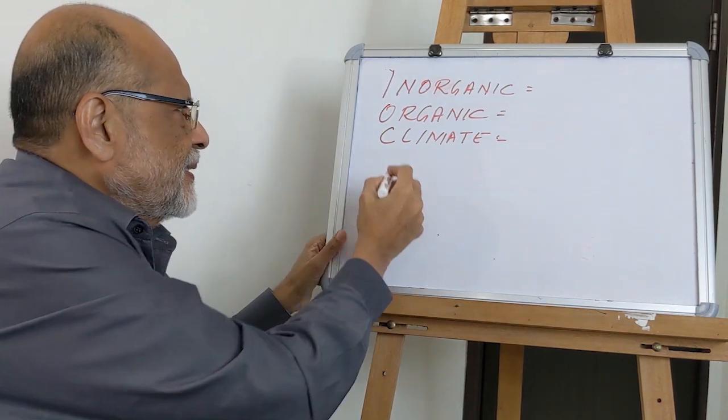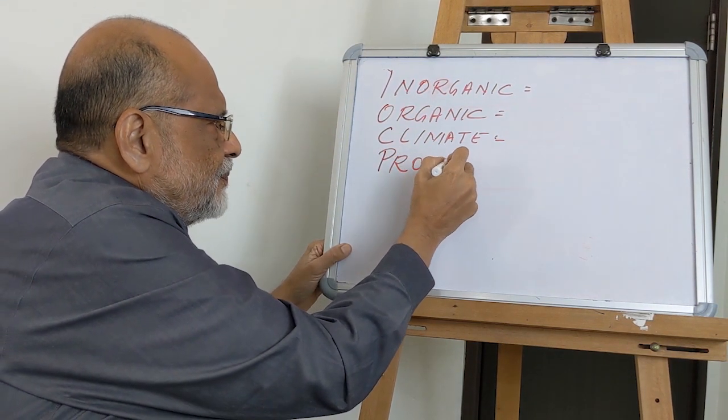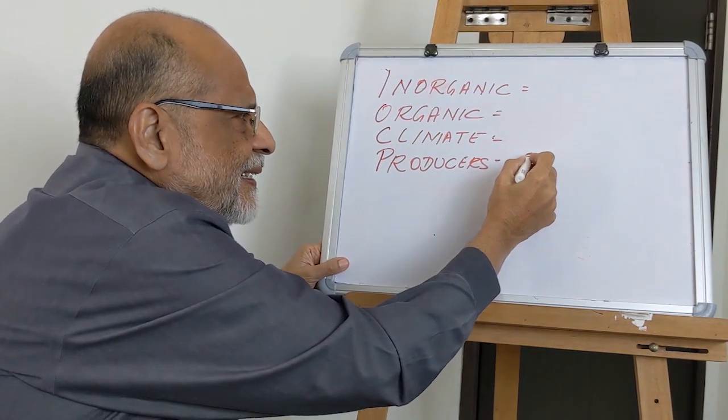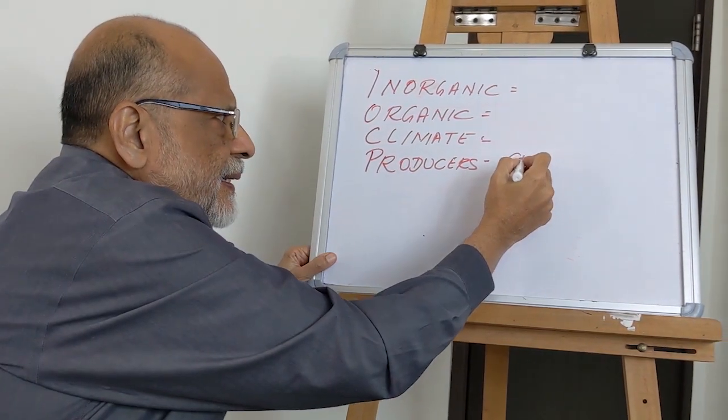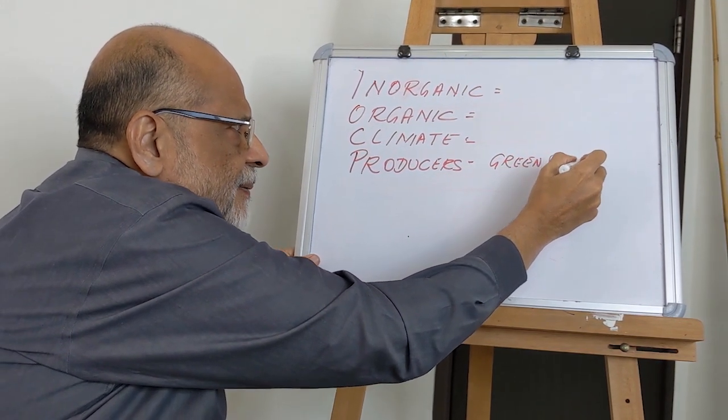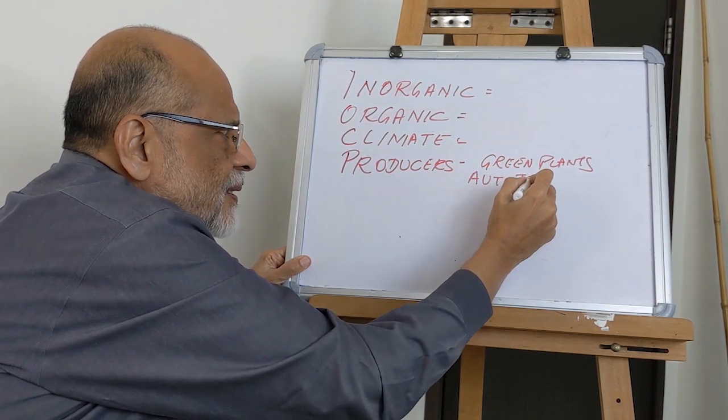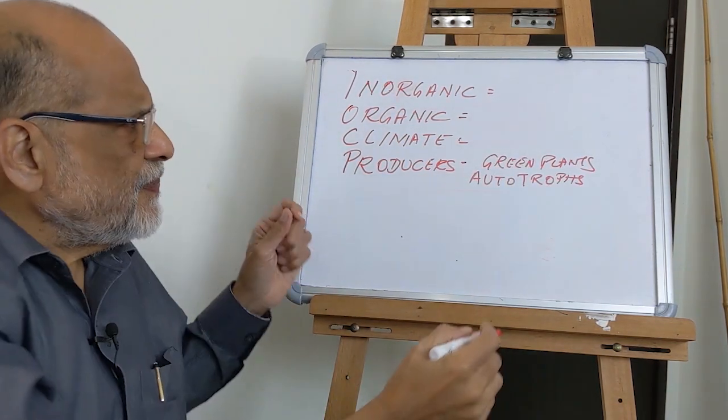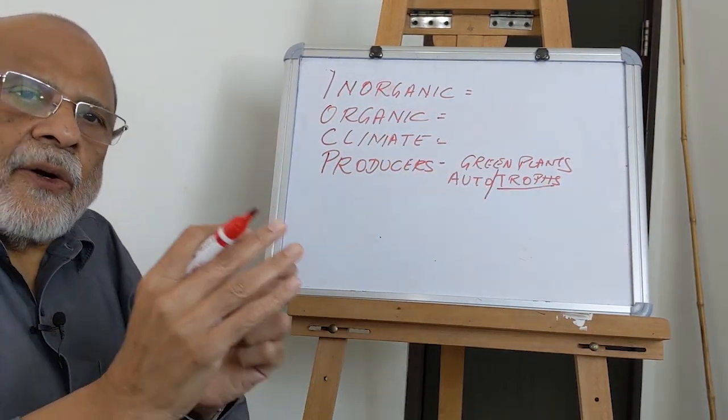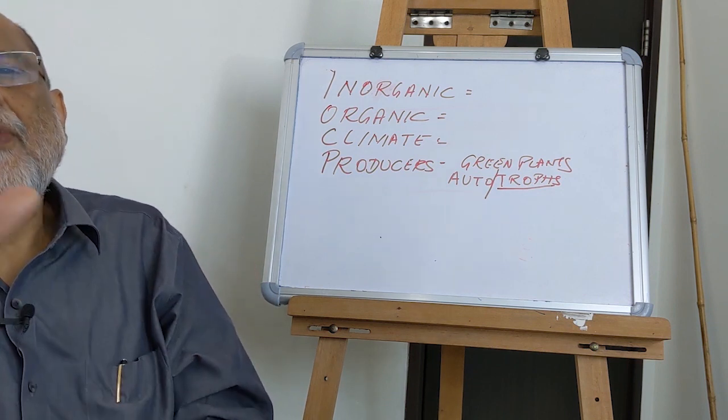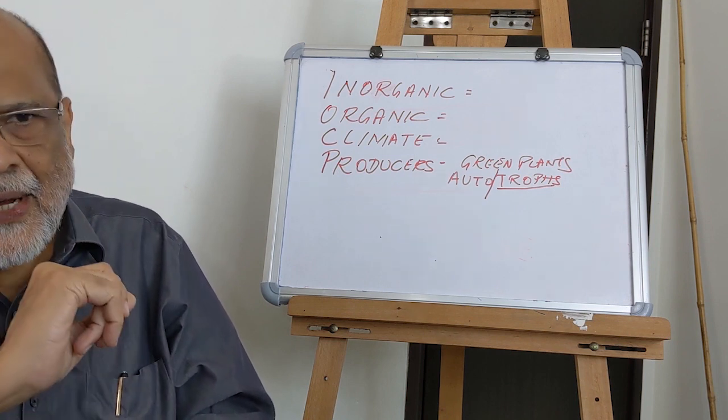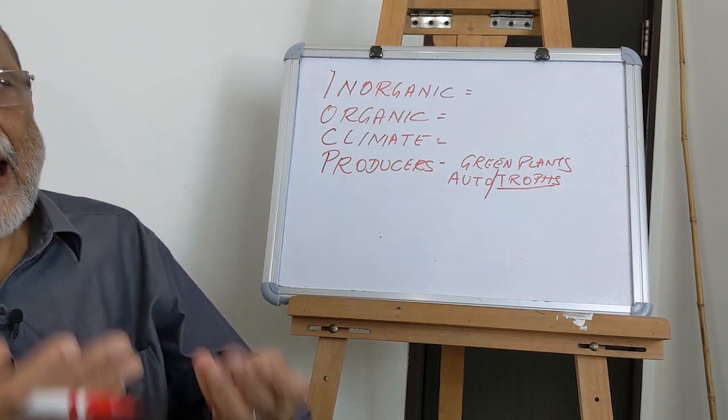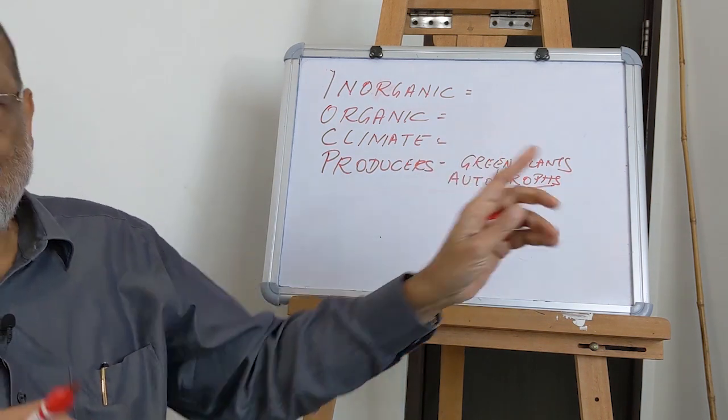The fourth most important component, we generally call them as producers. Now who are the producers? Yeah, you told it. What are they? Green plants, right? So what do we call them as? They are the plants, they are the green plants. But what do we call them scientifically? We call them as autotrophs. Now why should we call them as autotrophs? What does the meaning of trophs mean? Please understand children. Troph, T-R-O-P-H, is derived from the word trophos, T-R-O-P-H-O-S. And what is trophos? Yes. Trophos is nutrition. Trophos means nutrition. If I prepare my own nutrition, it is autotroph. Clear?